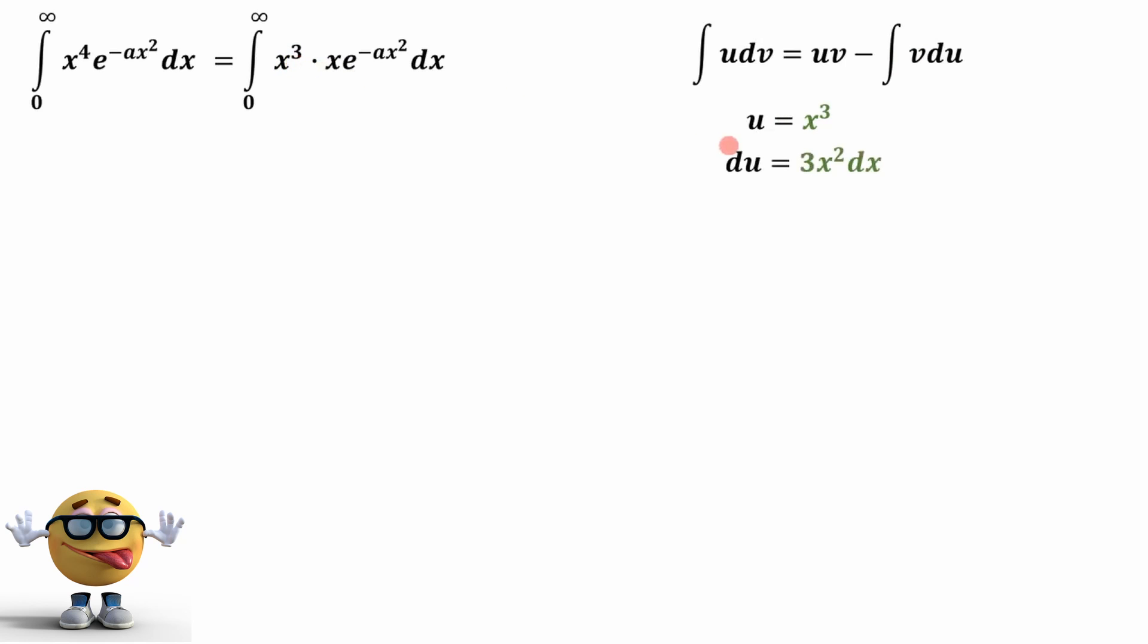So using the power rule, du equals 3x squared dx, and now dv is going to equal everything else. dv is everything else right here. And now the integral of this, we'll use substitution. Now I did a video, it's like a three minute video on how to do this step by step, so you can check that out. But I hope you can appreciate that if you do the derivative of this, you'll get this part right here.